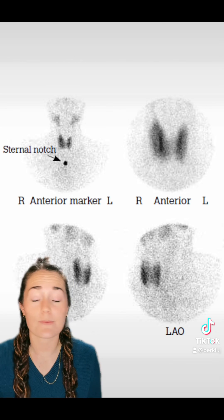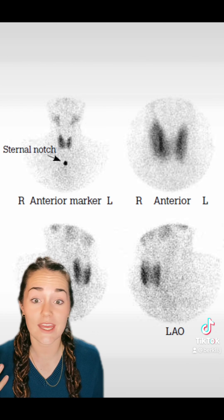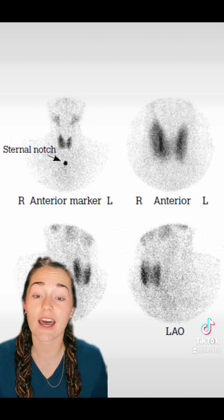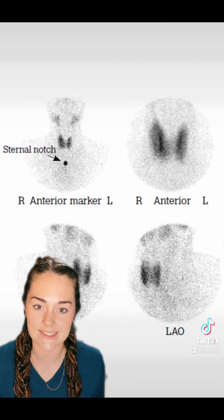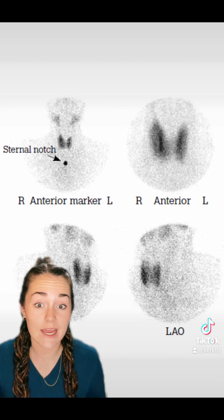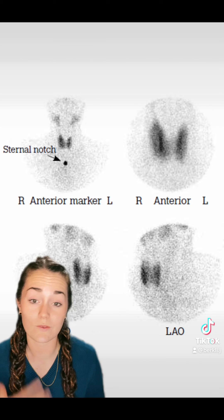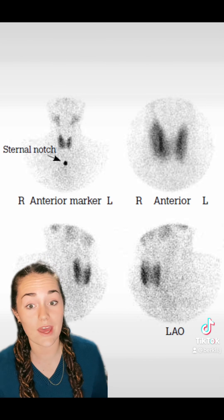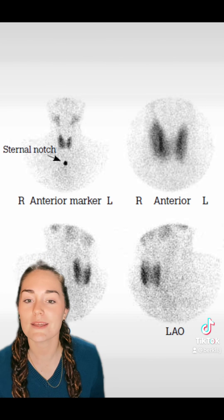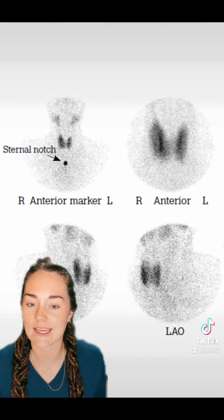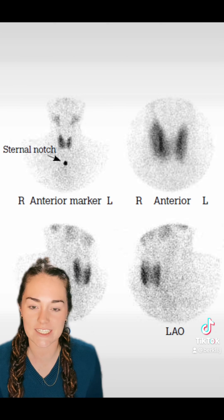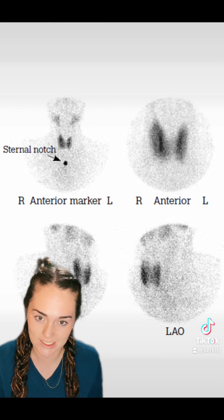Sometimes the thyroid sucks up way more than normal amounts, and then you're going to have hyperthyroidism — means your thyroid is working on overtime. Sometimes you have hypothyroidism, which means it's not sucking up as much as it needs to; it's not functioning as it should.